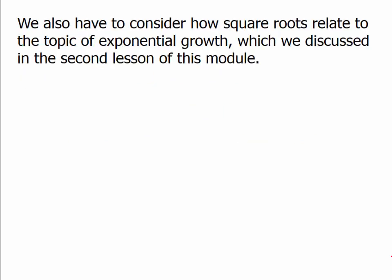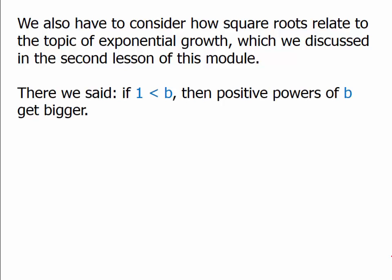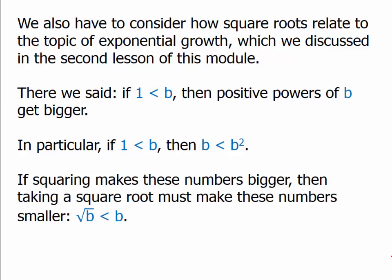We also have to consider how square roots relate to exponential growth. If b is greater than 1, then positive powers of b get bigger — raising a number bigger than 1 to a power makes it bigger and bigger. In particular, if b is bigger than 1, then the square of b has to be bigger than b. If b equals 1, then 1 squared equals 1 — that's the only time they're equal. If squaring makes numbers bigger, then taking the square root must make those numbers smaller. For numbers bigger than 1, squaring gives a bigger number and taking the square root gives a smaller number.